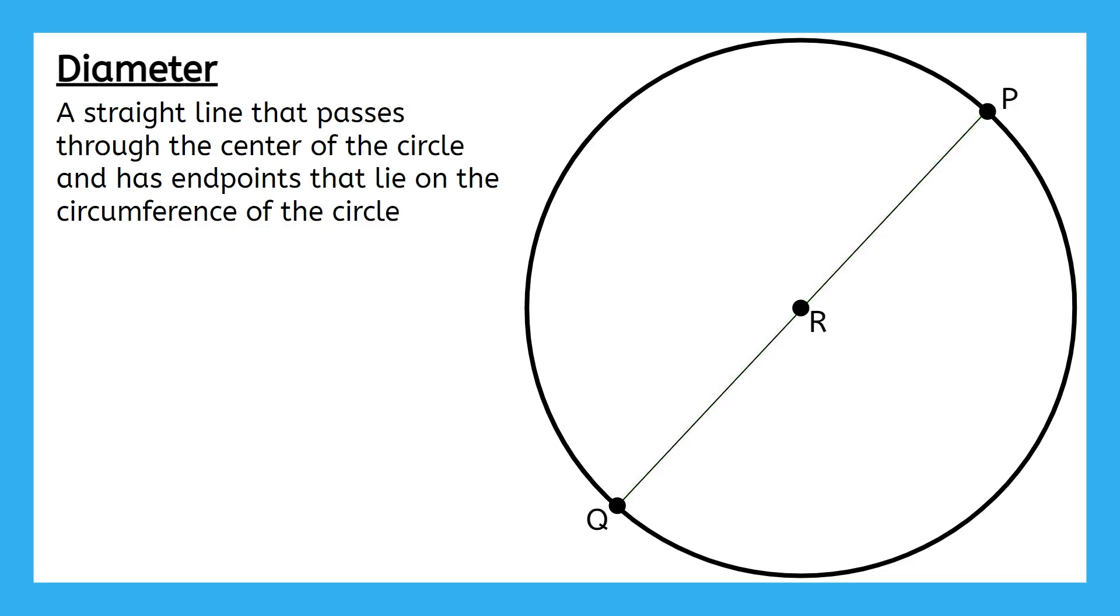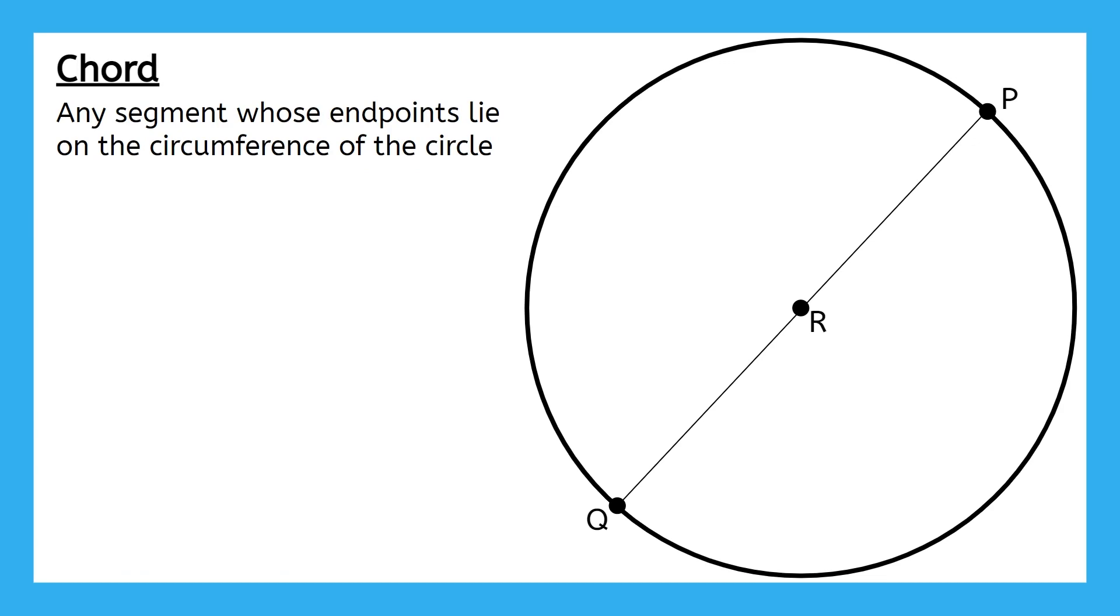A diameter contains two radii and is a specific type of chord. What's a chord, you ask? A chord is defined as any segment with endpoints on the circle. Diameters are a special type of chord that always goes through the center, but any segment connecting two points on the circumference of the circle will work. We could say that segment SP is a chord too.